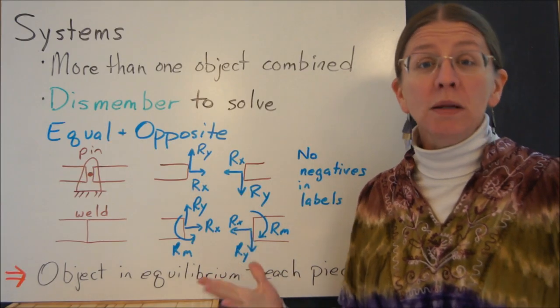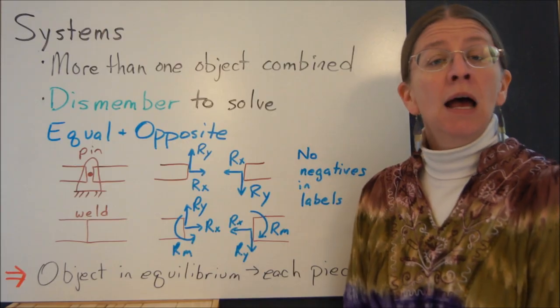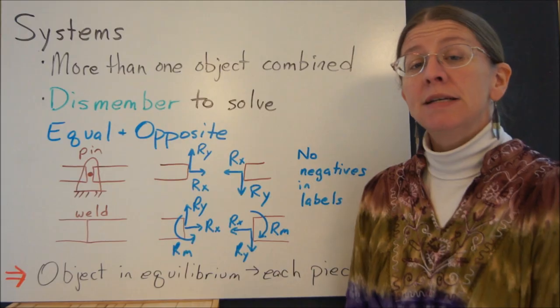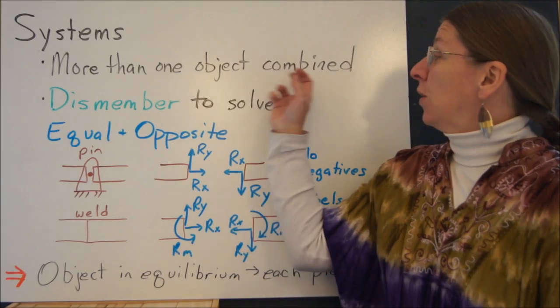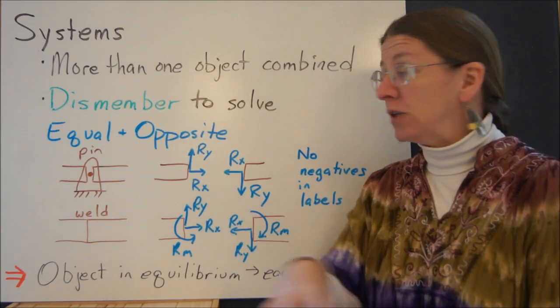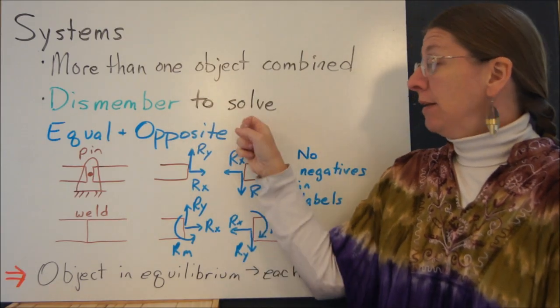After all, in our world, we build stuff out of multiple parts. When we try to apply equilibrium to an object that has multiple parts, what we generally need to do is take it apart. So we will dismember this structure in order to apply equilibrium to each and every part.